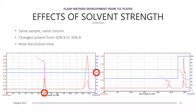Here we have a sample run on a column using the same solvents but with changed proportions. In the first run on the left, a 50-50 mixture of A and B solvent gave an elution of six minutes. Weakening the solvent to 70% A and 30% B causes the compound to elute much later at about 24 minutes — we shifted the partition coefficient to make the compound spend more time on the stationary phase. The step near 27 minutes to 100% B was done to wash out the second compound.